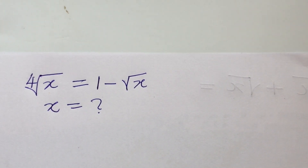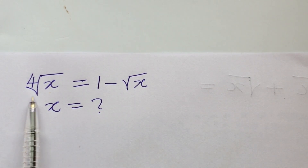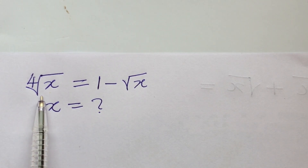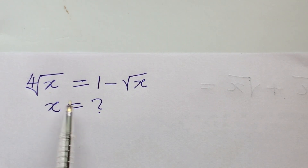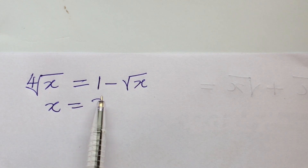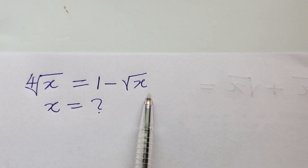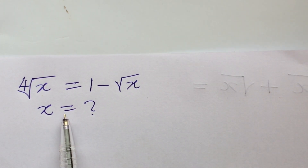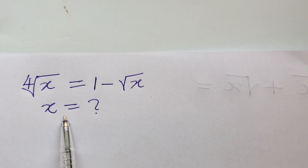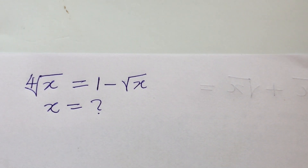Welcome everyone to my channel. Today we have a very nice radical equation. The question reads: the fourth root of x equals one minus the square root of x. What will be the value of x?